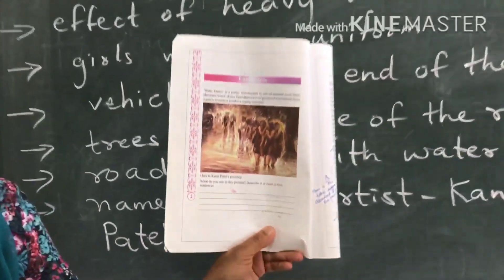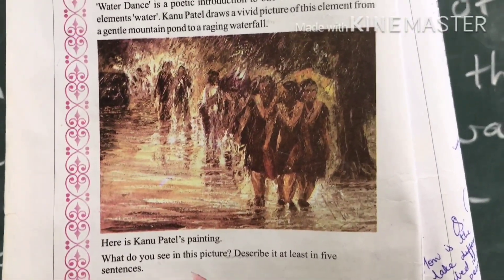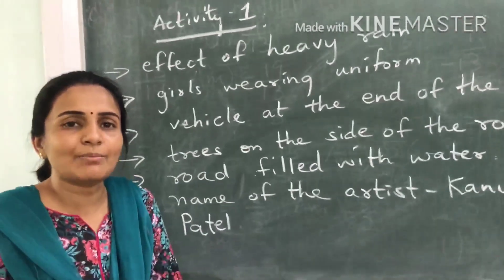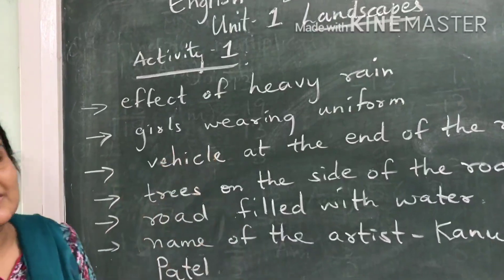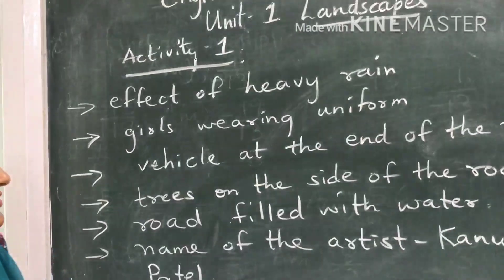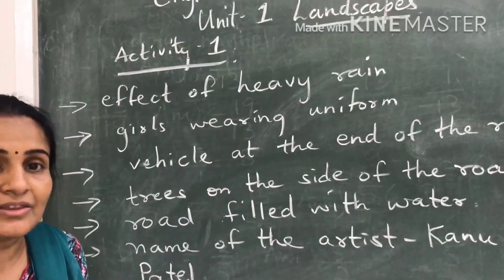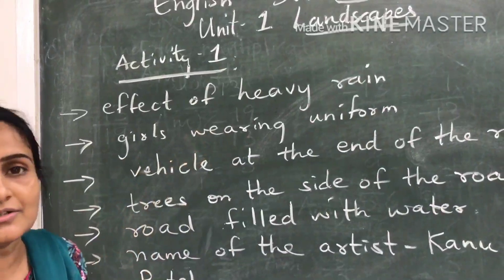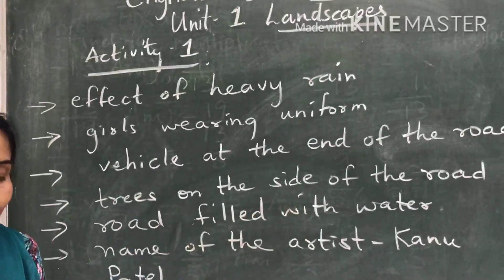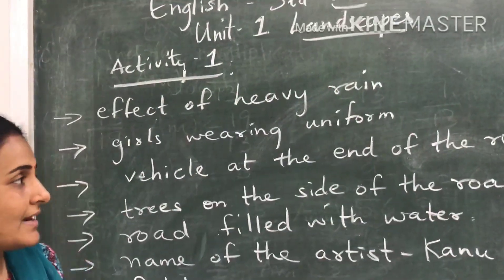In your textbook you have a picture that shows heavy rain, and your activity is to explain it in your own words. Write at least 5 sentences about the picture. First of all, this picture shows the effect of heavy rain. When you look at the picture properly, in the front part you can see girls wearing the same type of clothes — so maybe a uniform — and they are holding an umbrella, walking on the side of the road during heavy rain.